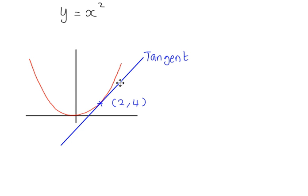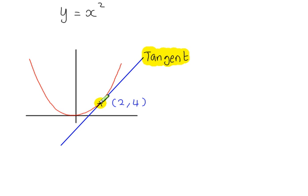This straight line is called the tangent to the curve at this point. It touches the curve at just one point — the point that has these coordinates. What's special about the tangent is that the gradient of the tangent line and the gradient of the curve at this point are the same. The gradient of the curve right there is equal to the gradient of the tangent line.